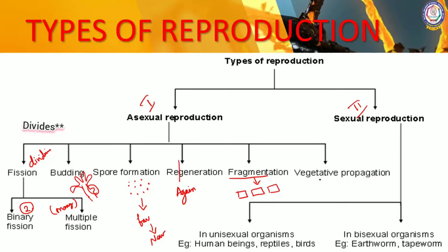Vegetative propagation — the name says it all: vegetative parts of the plant body, which are the root, stem, and leaves. When I say reproductive part, that is about the flower, and that we are going to see under sexual reproduction. The flower in a plant belongs to the reproductive part. So the next category is sexual reproduction, where we see the terms unisexual organism and bisexual organism.